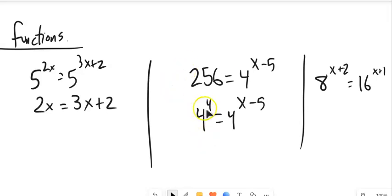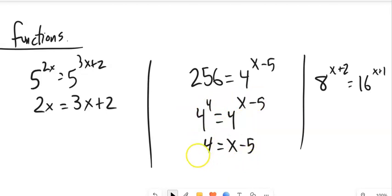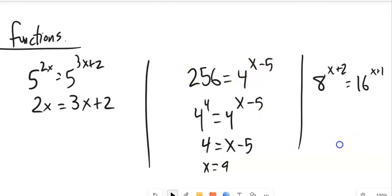Now that I have 4 to the 4th equals 4 to the x minus 5, I can set the exponents equal: 4 equals x minus 5, because they have the same base. Then just solve — add 5 to both sides, x equals 9. And notice what I end up with is 4 to the 4th on both sides.